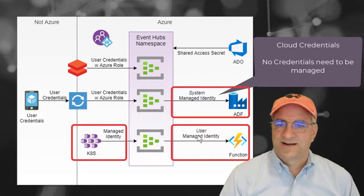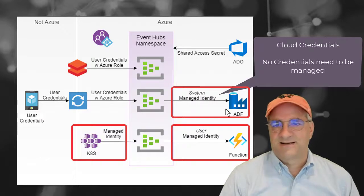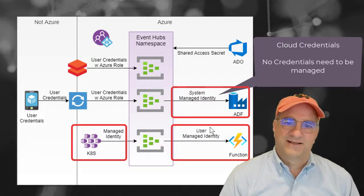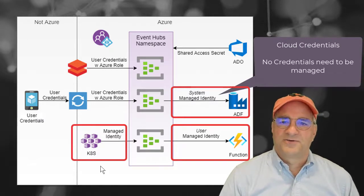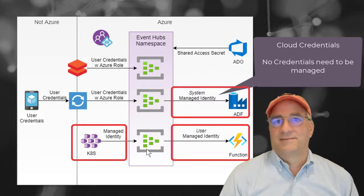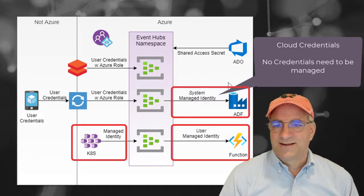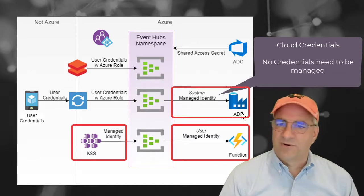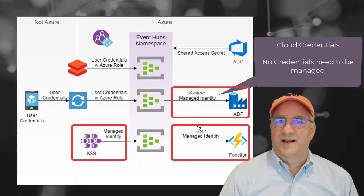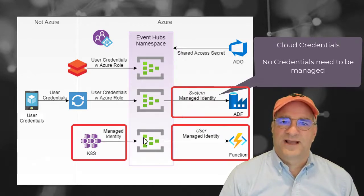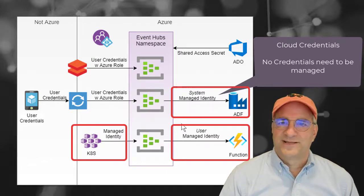I like user managed identities for some things and system managed identities for an individual component. For ADF, system might make sense. But if I do a user managed identity and I had five or six different Kubernetes apps, I could give them all the same identity — just like a shared fragment of an identity — and they could all publish to the same event hub. Managed identities are a way for an Azure resource to identify itself to another Azure resource. It works inside Azure and no credentials need to be managed.